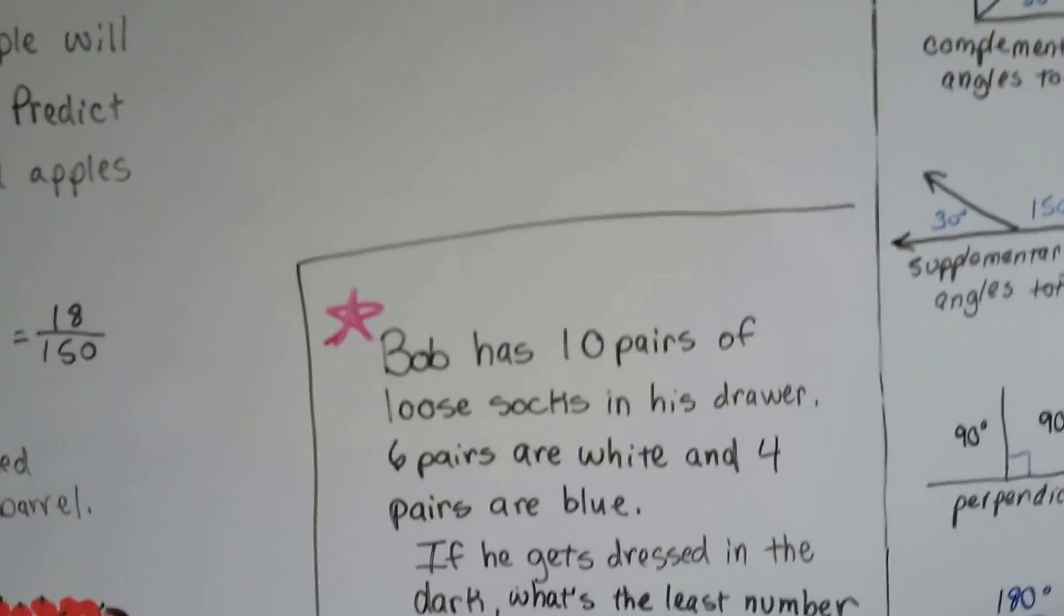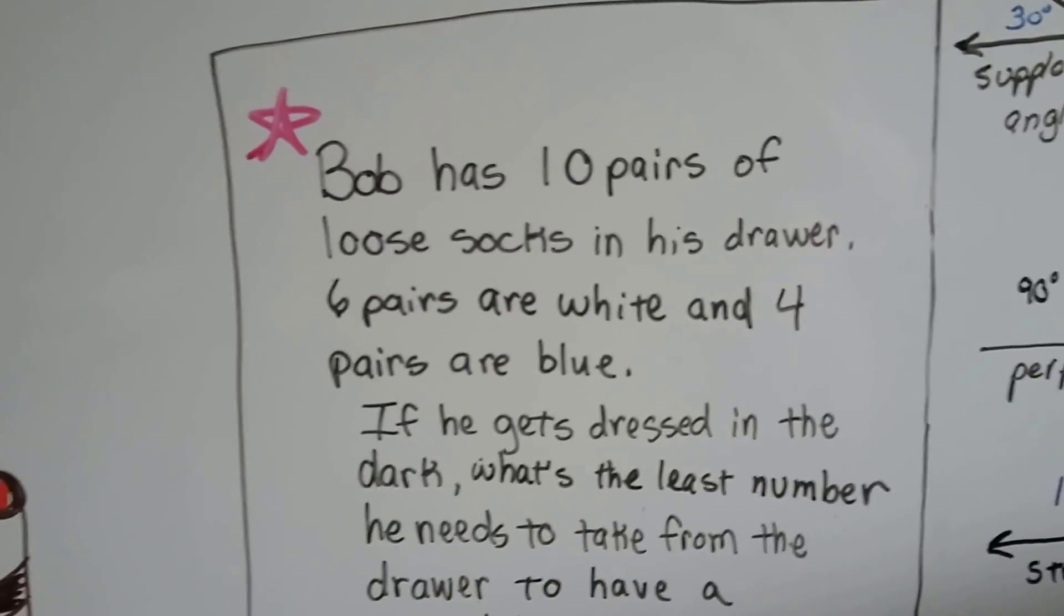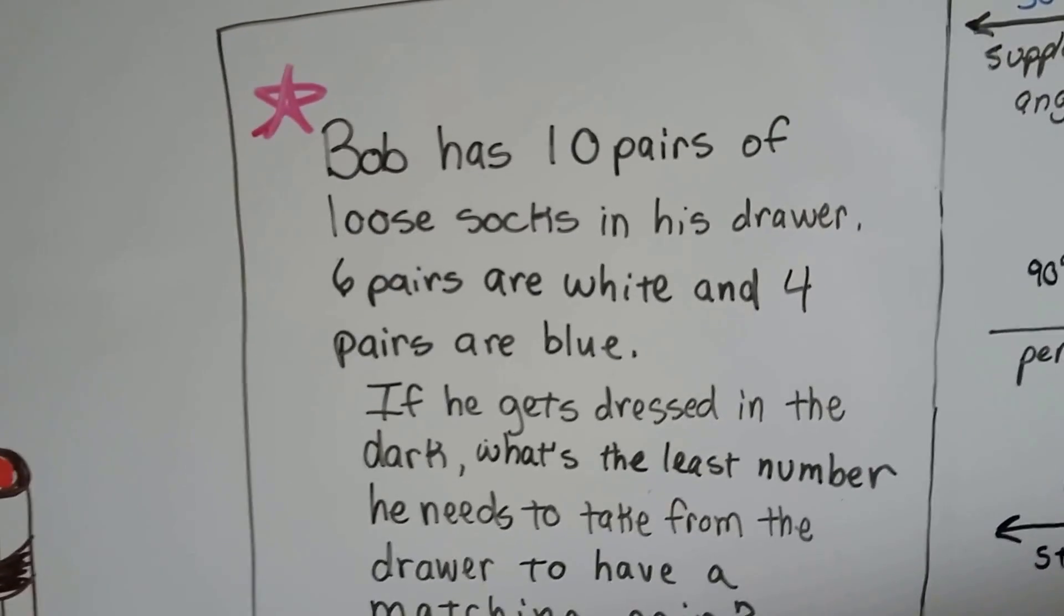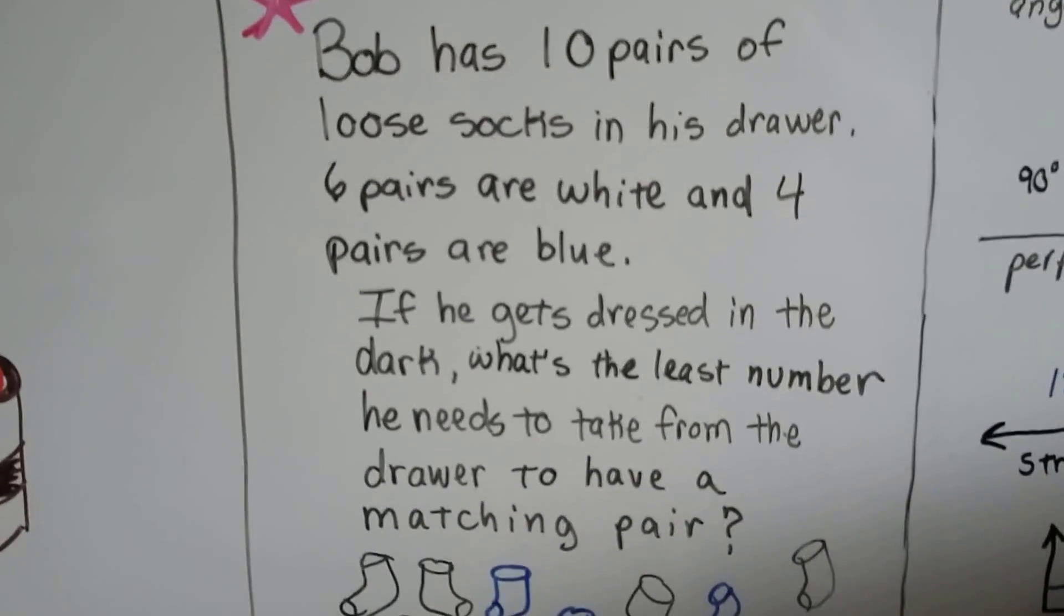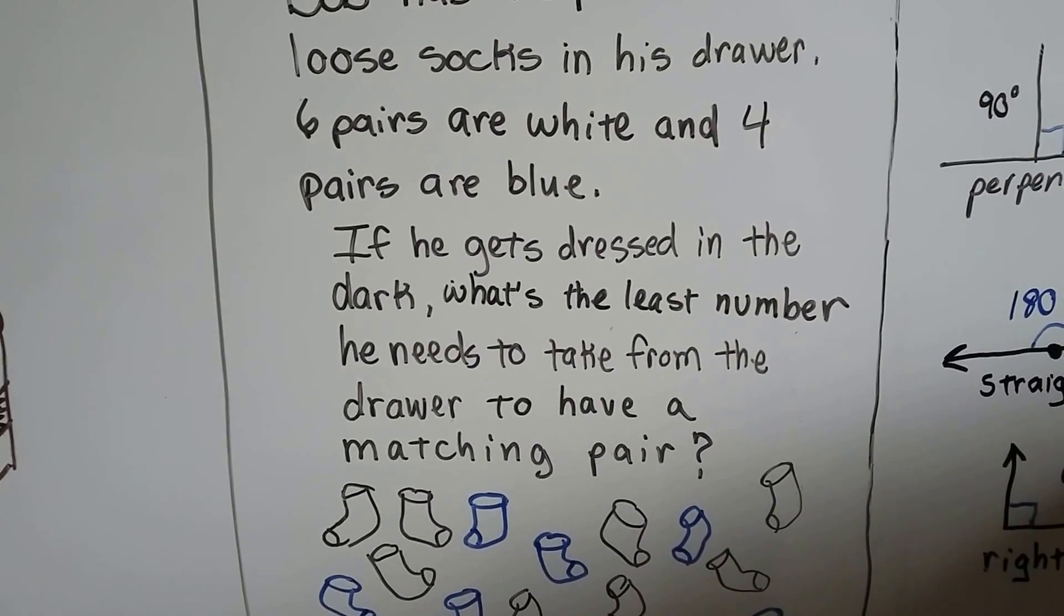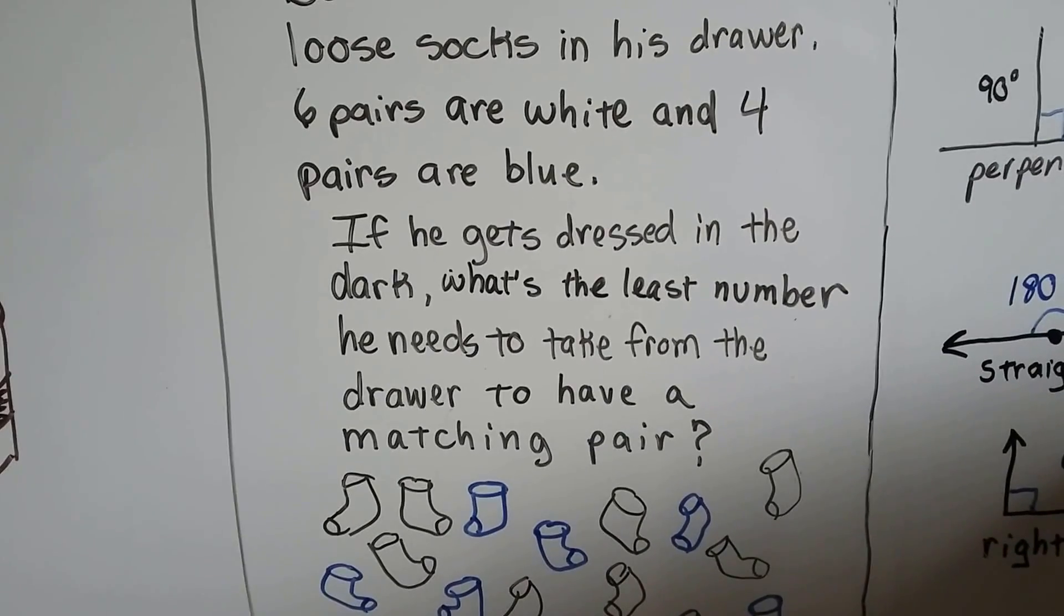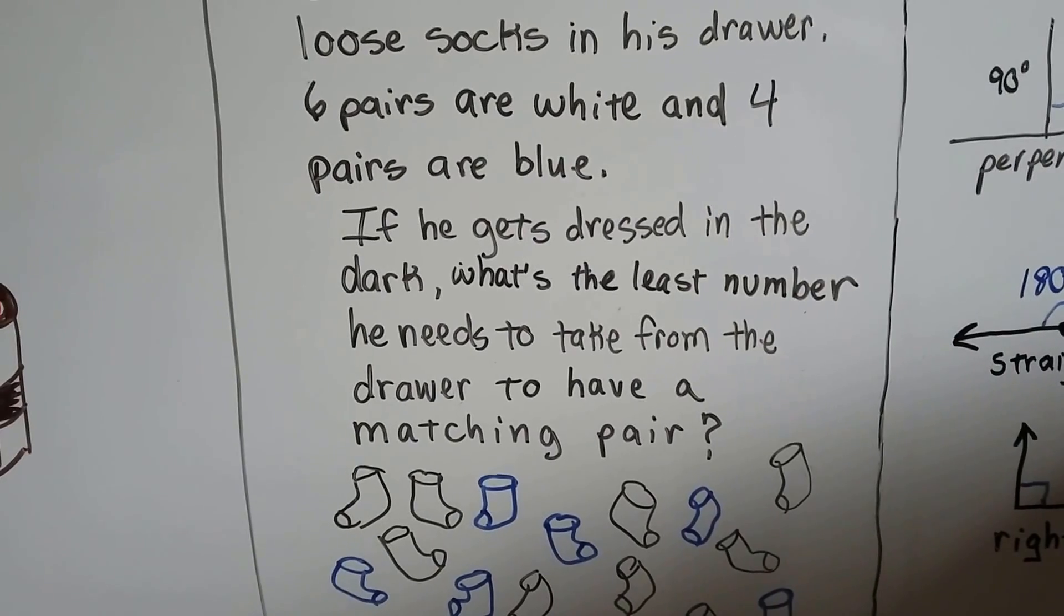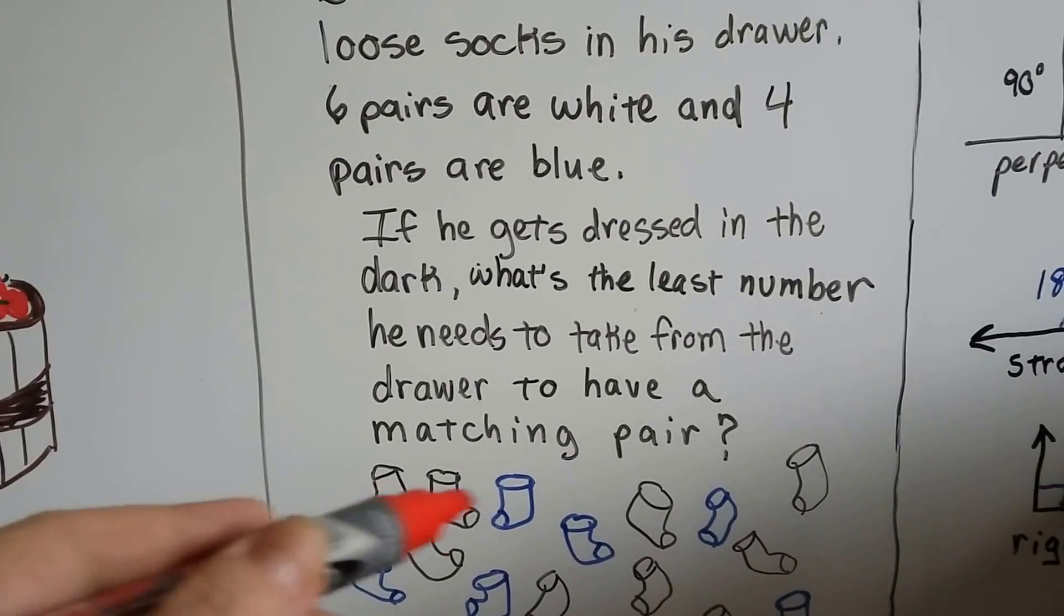Here's a bonus one. Bob has 10 pairs of loose socks in his drawer. He did not fold them together. They're all loose and separate. Six pairs are white, and four pairs are blue. If he gets dressed in the dark, what's the least number he needs to take from the drawer to have a matching pair? He can't see what he's doing, and he reaches in the drawer and grabs one. It could be white, or it could be blue.